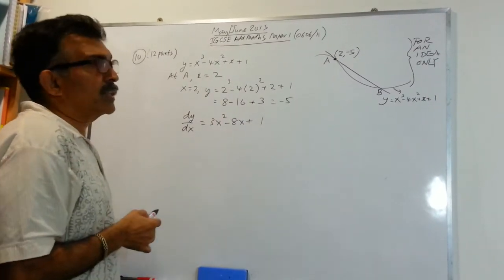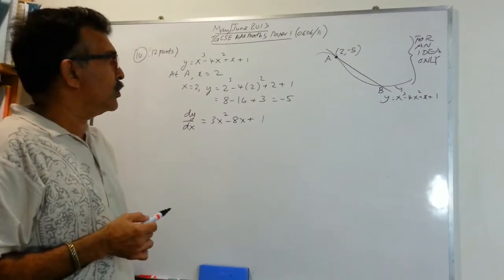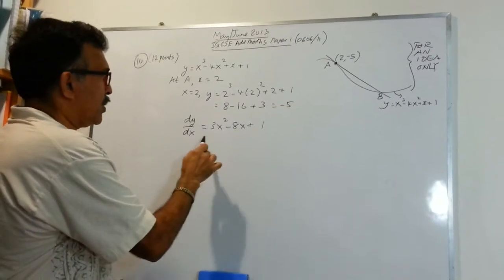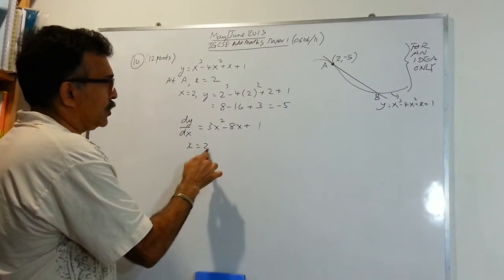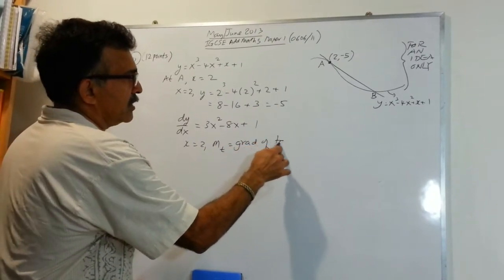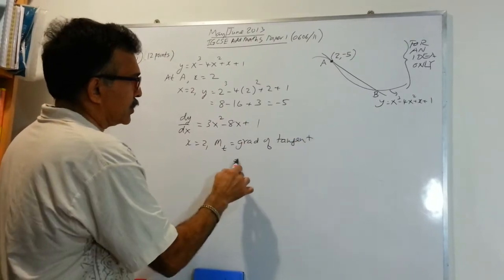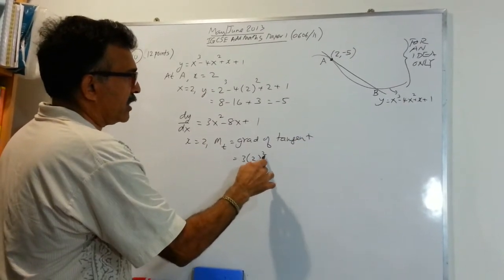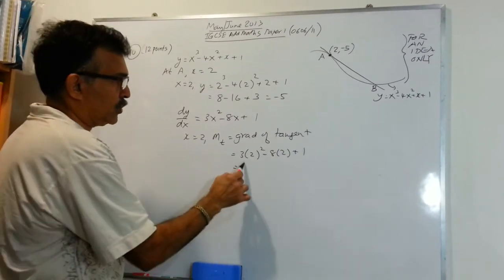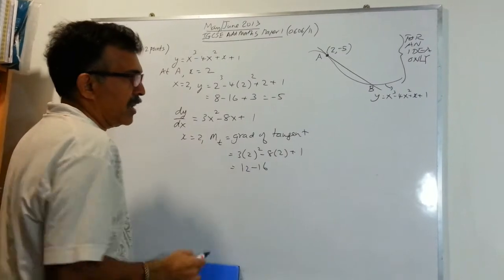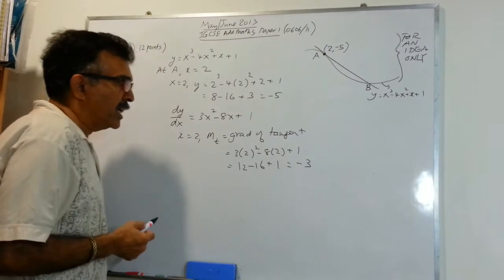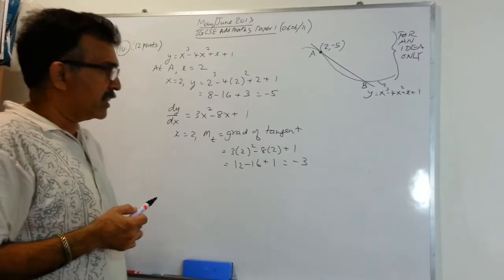So to find the gradient of the tangent, we need to plug in the value of x, which is 2, into the gradient function, so that we can get the gradient of the tangent. So x equals 2, the gradient of the tangent will be equals to 3 times 2 squared minus 8 times 2 plus 1. And so here I'll have 12 minus 16 plus 1 and then minus 3. So the gradient of the tangent at A is negative 3.